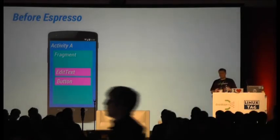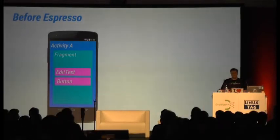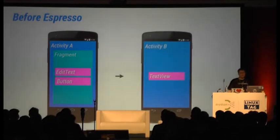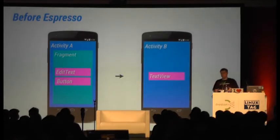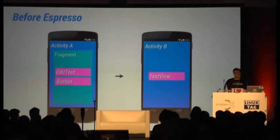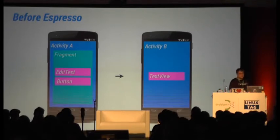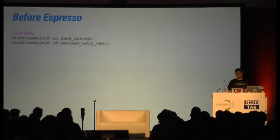You can enter text, click a button, then Activity B opens up and displays the text — a very simple scenario. Let's have a look at a test before Espresso. The first thing you would do is find your views.